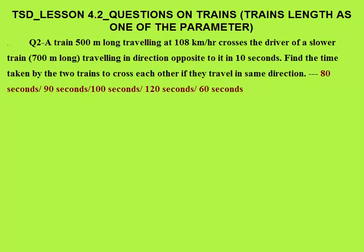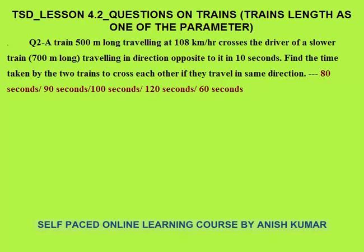Second question: a train 500 meters long travelling at 108 km/h crosses the driver of a slower train travelling in the opposite direction in 10 seconds. Two trains are travelling in opposite direction, so speeds are added. Importantly, the faster train is crossing the driver of the slower train — not the entire train. Whenever a train crosses a person, the distance travelled equals the length of the faster train.